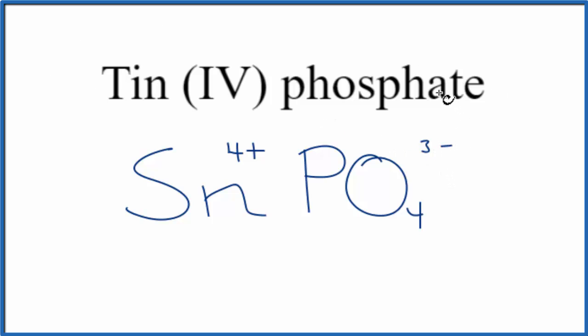Since tin (IV) phosphate is neutral - it doesn't say ion here - these charges need to balance. It's a little difficult. We have a 4+ and a 3-.